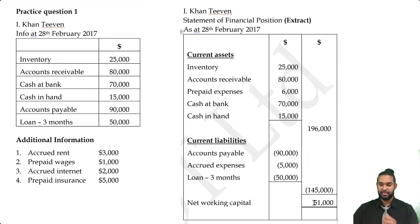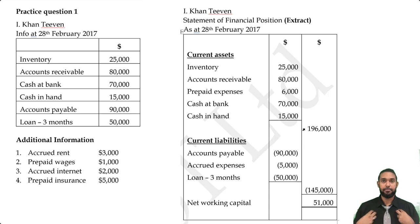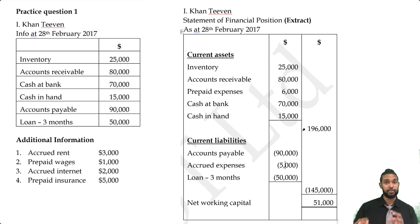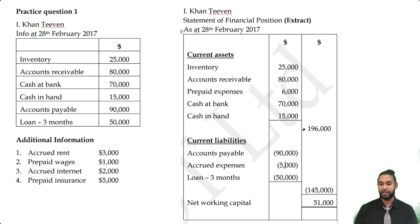In the question I used brackets to indicate deductions — subtracting liabilities from assets. Brackets aren't necessary; some people use minus signs instead. I was trained with brackets as a visual cue for negative items, so you'll see that in my work. If it bothers you, I apologize. So that's it for example one and practice question one. Now let's look at how we treat the provision for bad debts in the balance sheet.